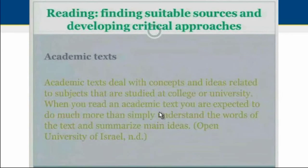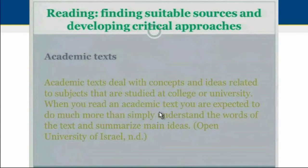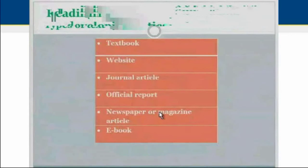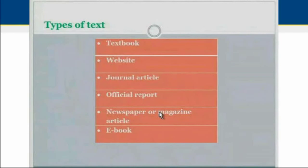We can find valuable information when selecting academic texts, which deal with concepts and ideas related to subjects studied at college or university. When you read an academic text you are expected to do much more than simply understand the words and summarize the main ideas. We can find available information in different types of texts such as textbooks, websites, journal articles, official reports, newspapers, magazine articles, and e-books. It depends on us to select the most appropriate type of text according to the information we are looking for.